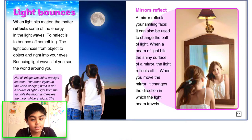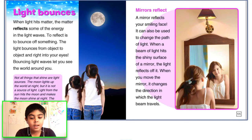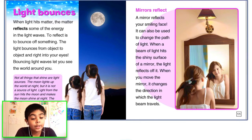Light bounces. When light hits matter, the matter reflects some of the energy in the light waves. To reflect is to bounce off something. The light bounces off from object to object and right into your eyes. Bouncing light waves let you see the world around you. A mirror reflects your smiling face. It can also be used to change the path of light. When a beam of light hits the shiny surface of a mirror, the light reflects off it. When you move the mirror, it changes the direction in which the light beam travels.